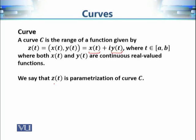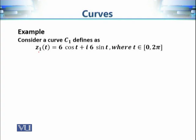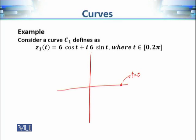This curve C has z(t) as its parameterization. Let's consider some examples. Starting with z1(t) = 6cos(t) + i·6sin(t), where t varies from 0 to 2π. At t = 0: sin(0) = 0 and cos(0) = 1, so the value is 6 + i·0. That is our starting point on curve C1.